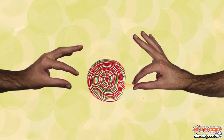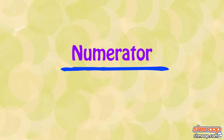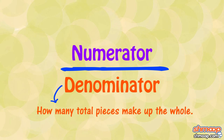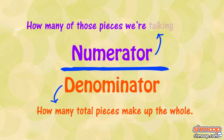Let's start by breaking down one of these suckers. Up top you've got your numerator, and downstairs is the denominator. The denominator tells us how many total pieces make up the whole, while the numerator says how many of those pieces we're talking about.